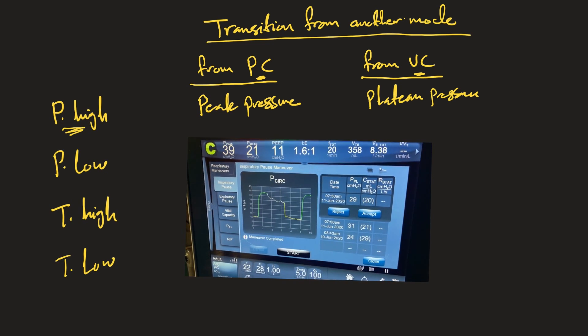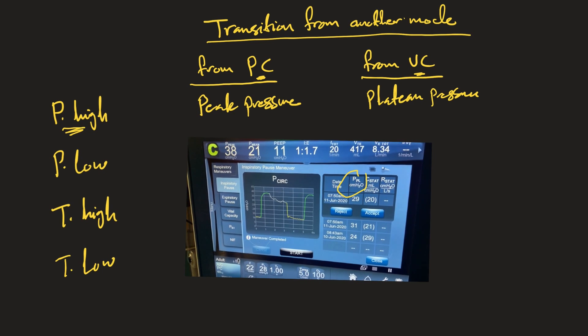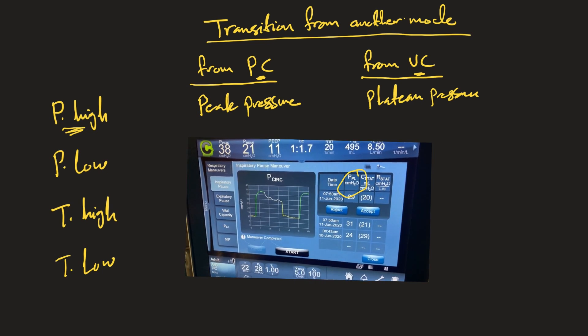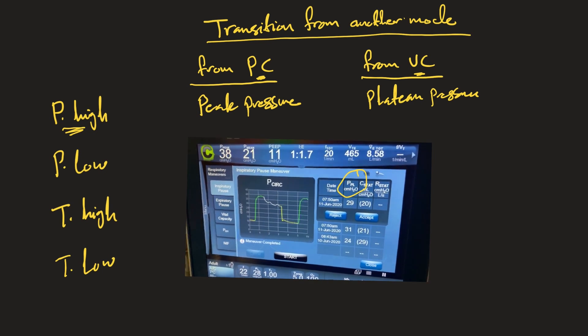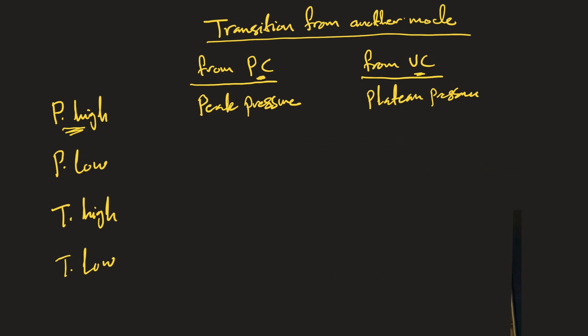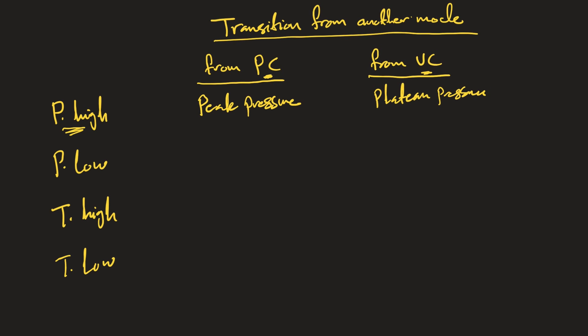For transitioning from volume control, use the plateau pressure. To get plateau pressure, perform an inspiratory hold maneuver — I have a quick video clip here showing this. The plateau pressure from the inspiratory hold becomes your P-high when transitioning from volume control. So: from volume control, P-high equals plateau pressure; from pressure control, P-high equals peak pressure.